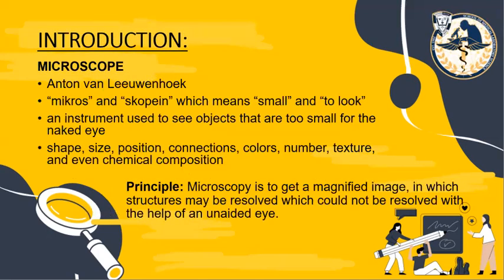The microscope was invented by Anton van Leeuwenhoek. The term microscope comes from the ancient Greek words mikros, which means small, and skopien, which means to look. So it is the instrument that we use to see objects that are too small for the naked eye.